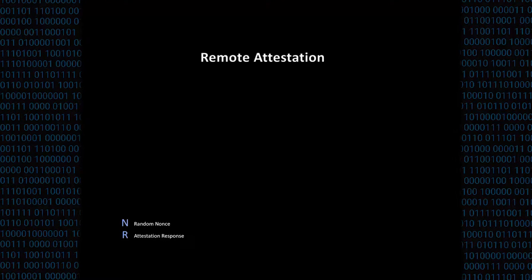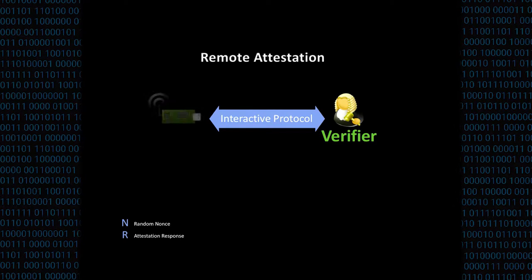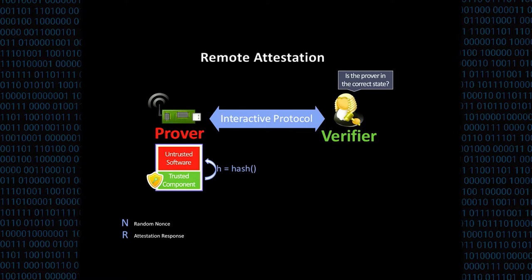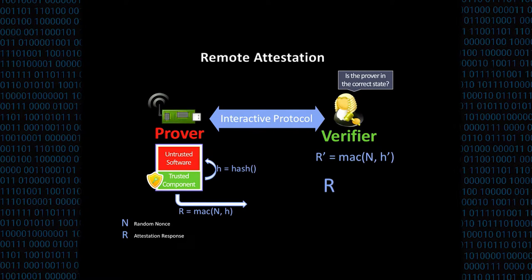First, what is remote attestation? Remote attestation is an interactive protocol between a trusted party denoted by the verifier and a remote entity denoted by the prover, through which the verifier wants to check if the prover is in a trustworthy state. The verifier sends a random challenge to the prover. On the prover side, a trusted component generates a measurement of the untrusted software — a hash, for example — authenticates this measurement, and sends it back to the verifier. The verifier then verifies the MAC, checks the measurement, and if it's as expected, accepts it.